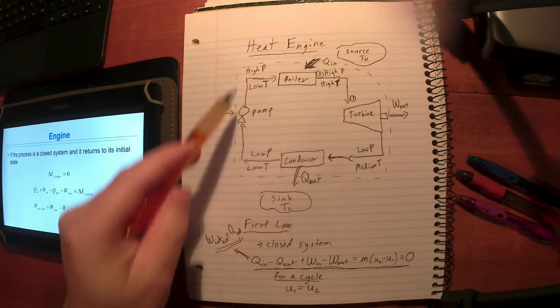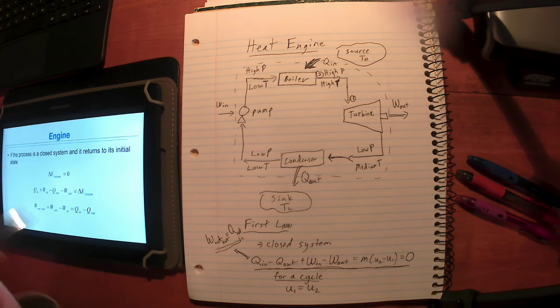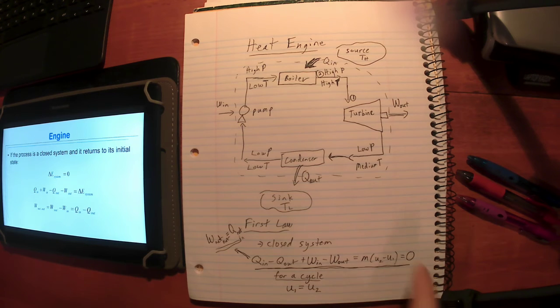So either way it works. Just like normal, draw your system, put a boundary around it, add the stuff that comes in, subtract the stuff that comes out, set it equal to change. If it's a cyclic system, that change is zero.